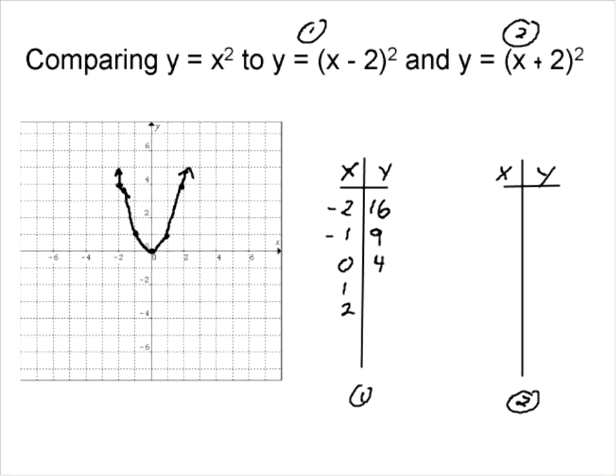1 minus 2 is negative 1 squared, we get 1. 2 minus 2 is 0 squared, we get 0.